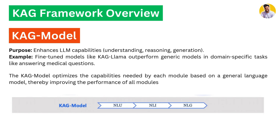The CAG Model represents the large language model capabilities — natural language understanding, reasoning, and generation. There are fine-tuned models like CAG-LLaMA that outperform generic models. CAG models are optimized to perform natural language tasks at a very high level, and these fine-tuned models are used within the CAG framework.